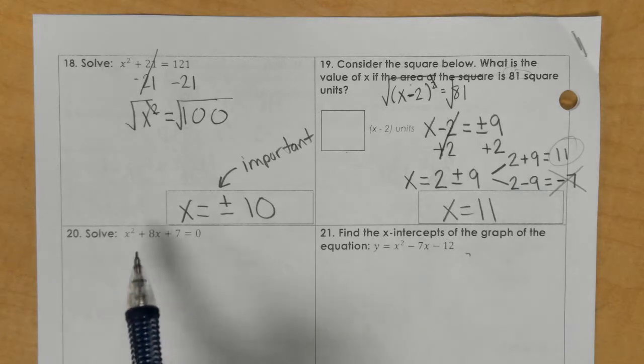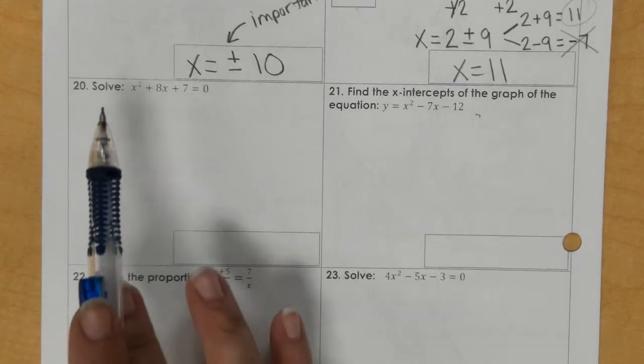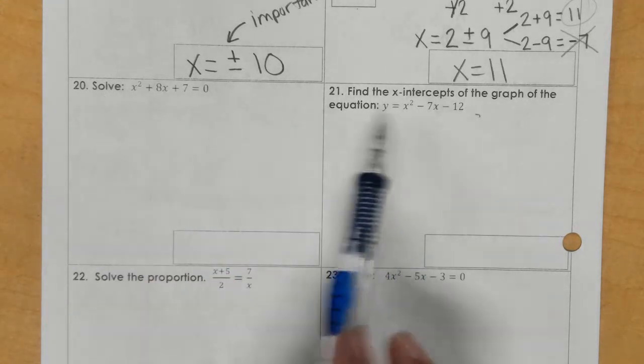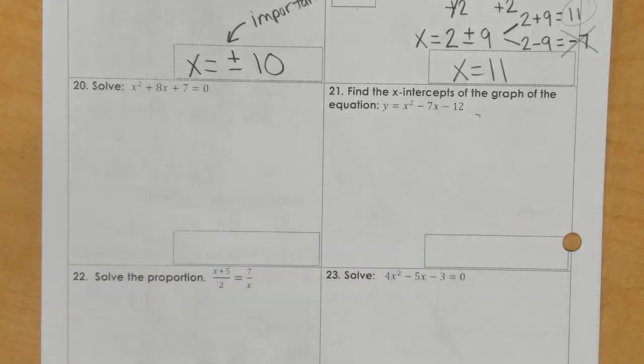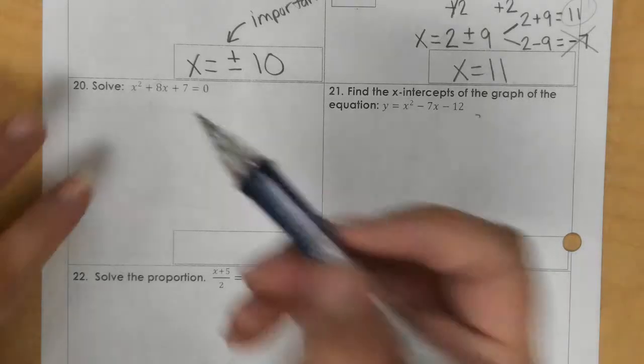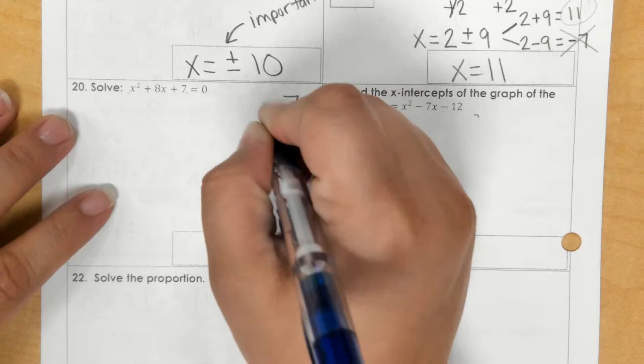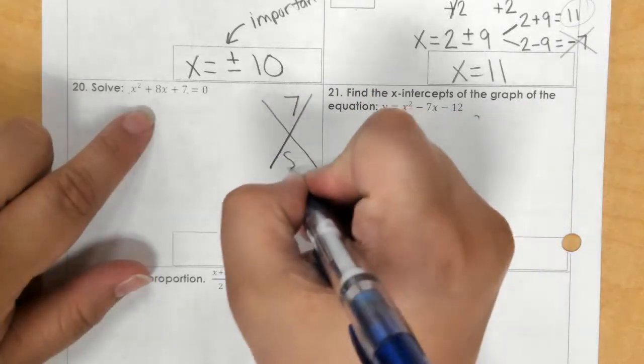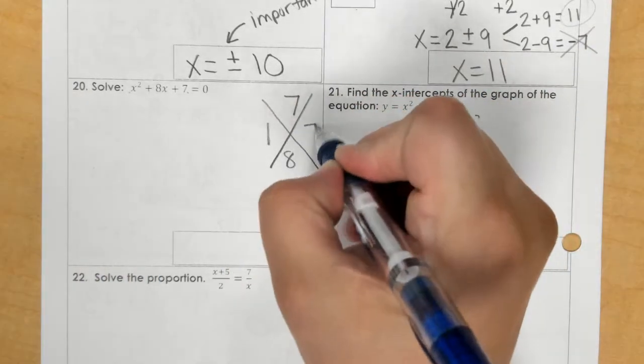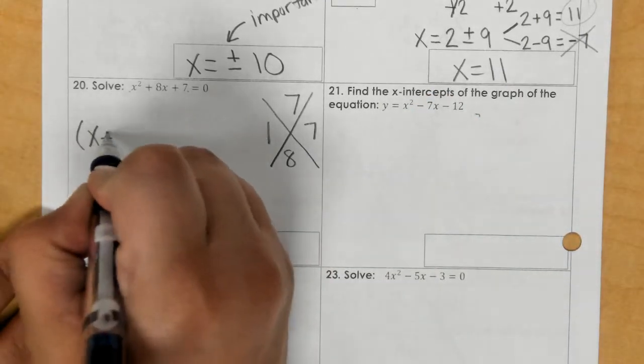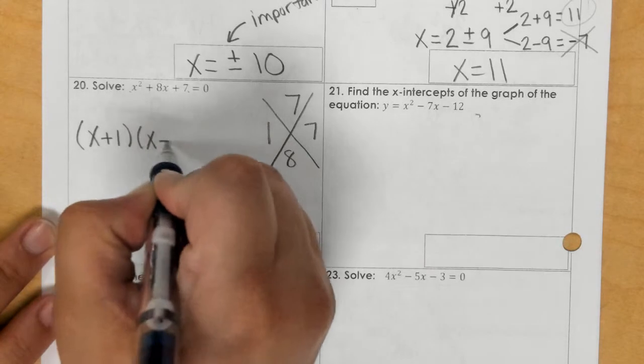In number 20 and 21, it says to solve. And this is as find in the x-intercepts. I want you to think of 20 and 21 as being x-factor problems. How would you x-factor? How would you solve? And so I would go 1 times 7 is 7, and you're trying to get to 8. So 1 plus 7 makes 8.